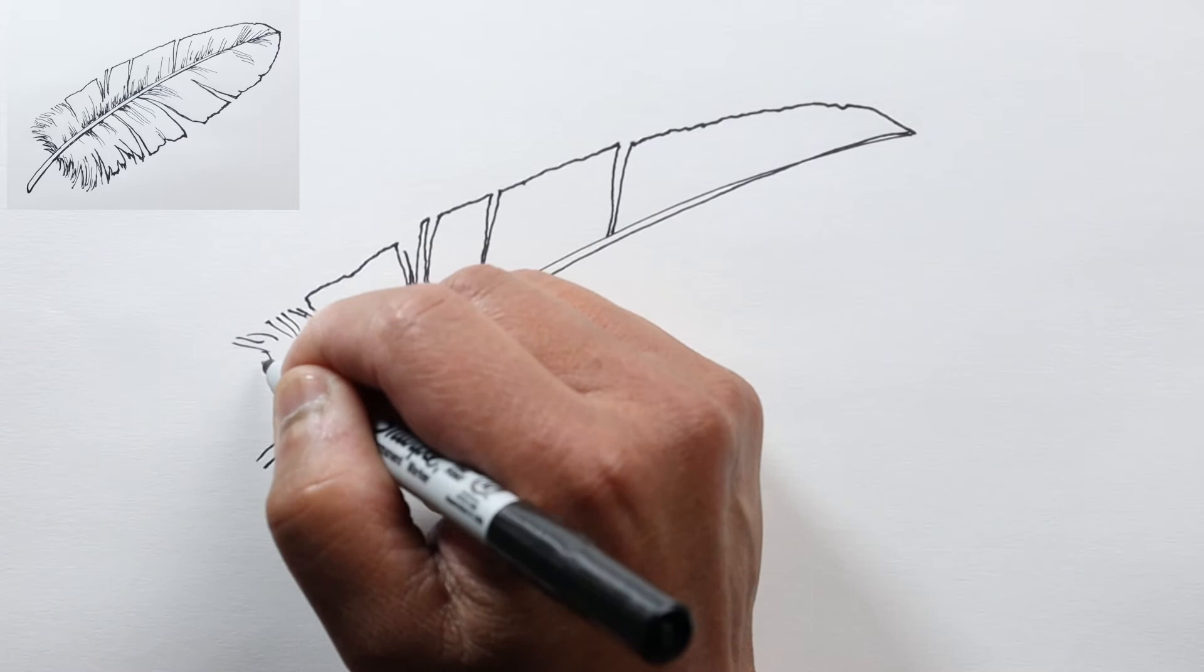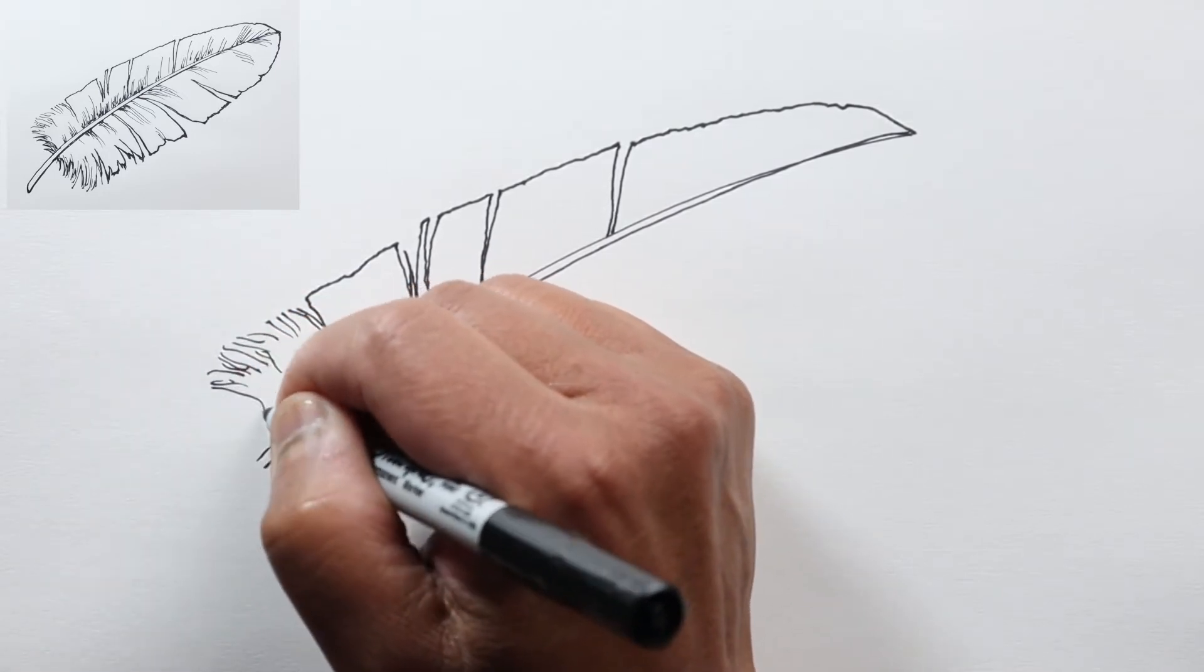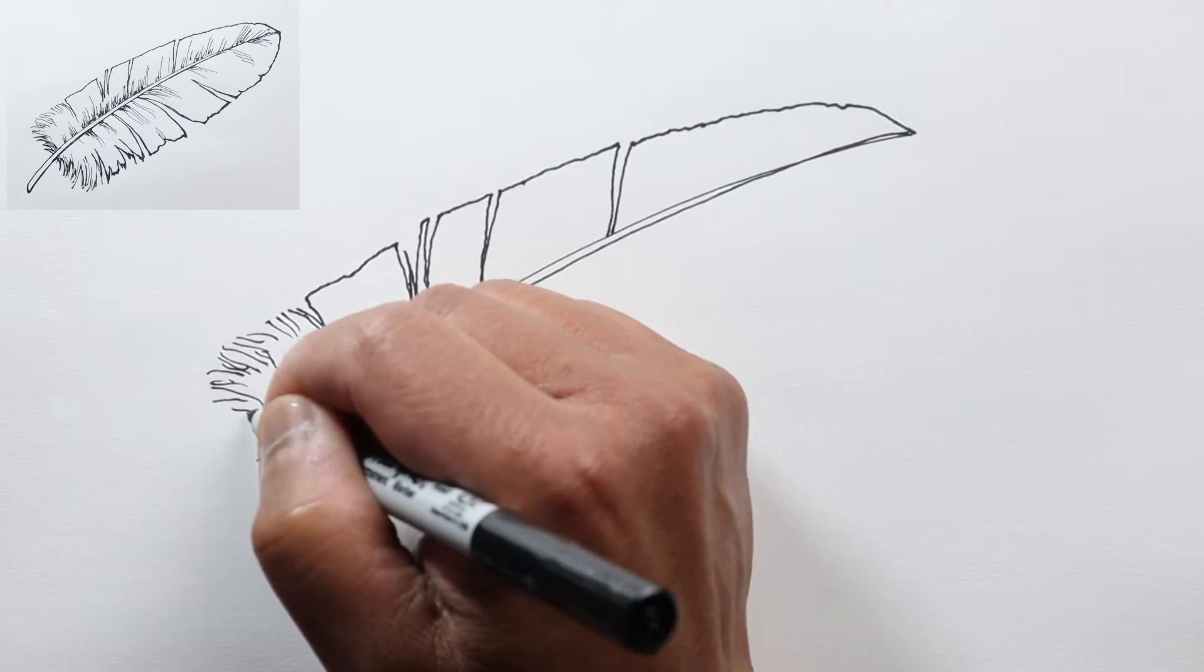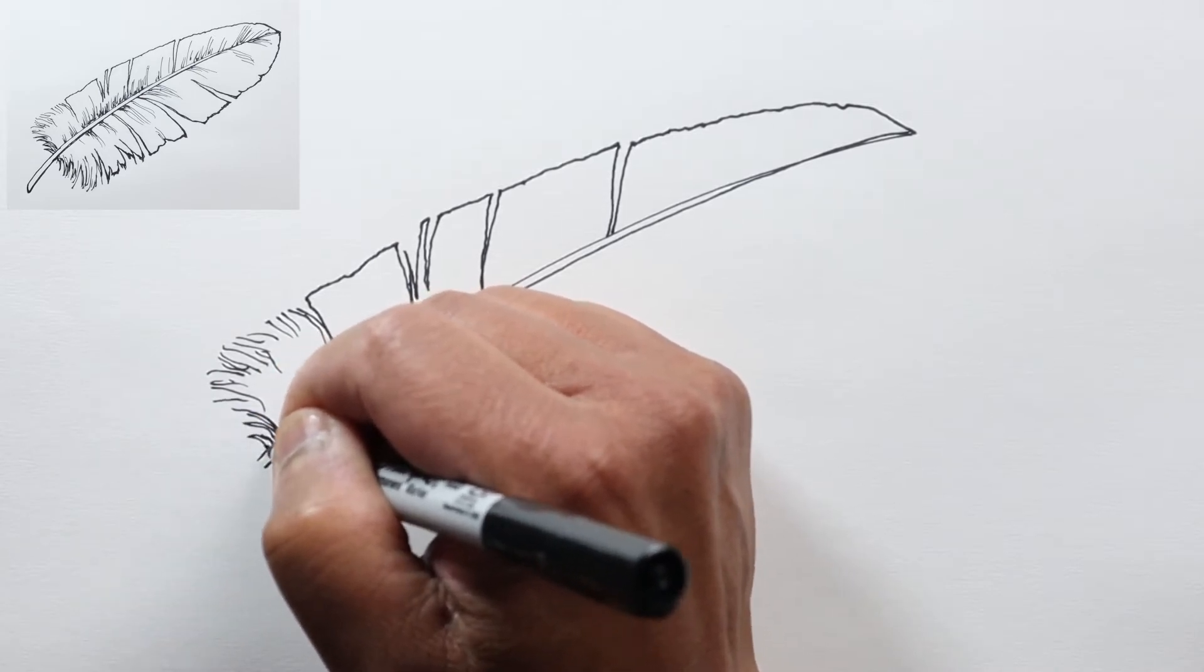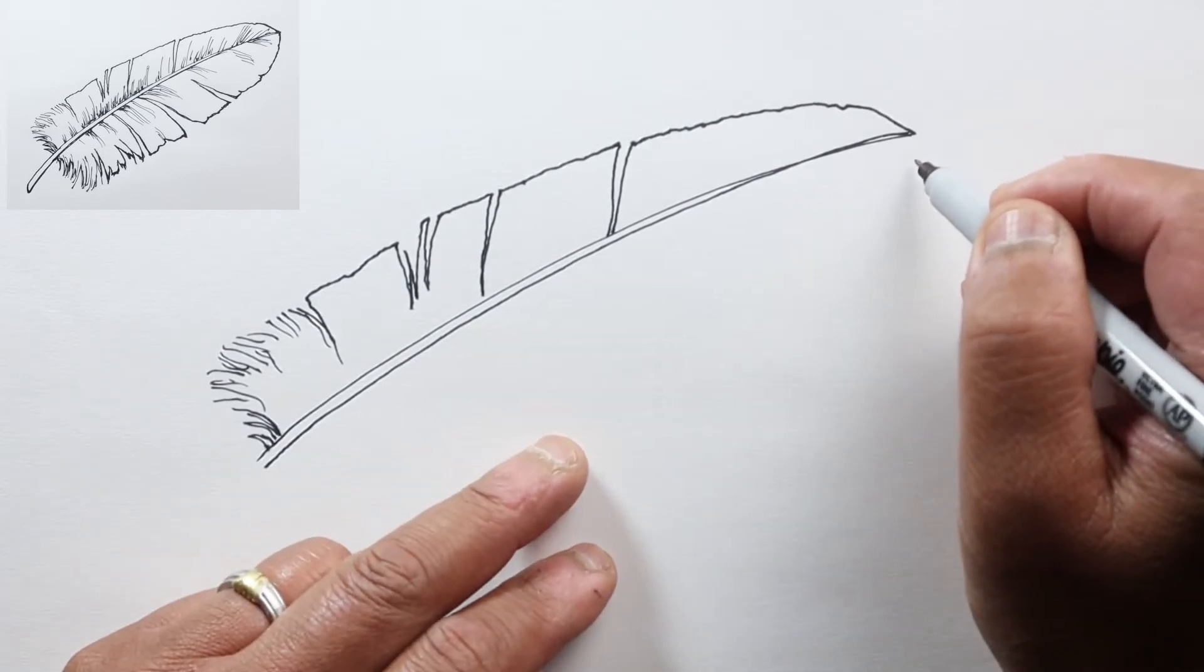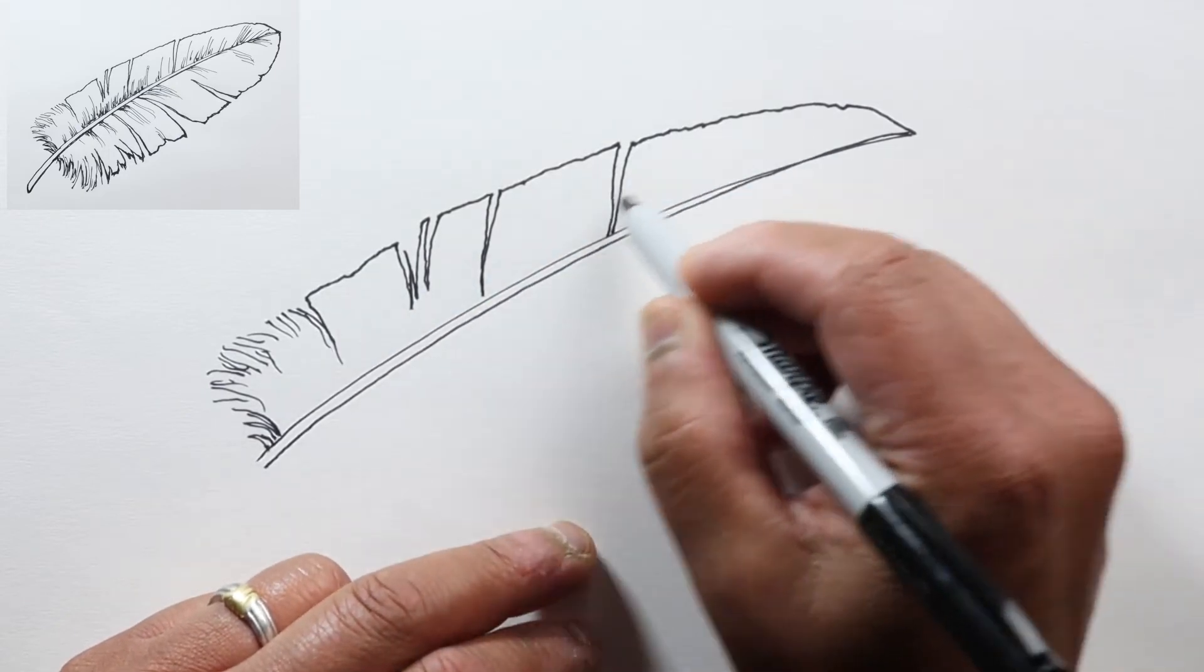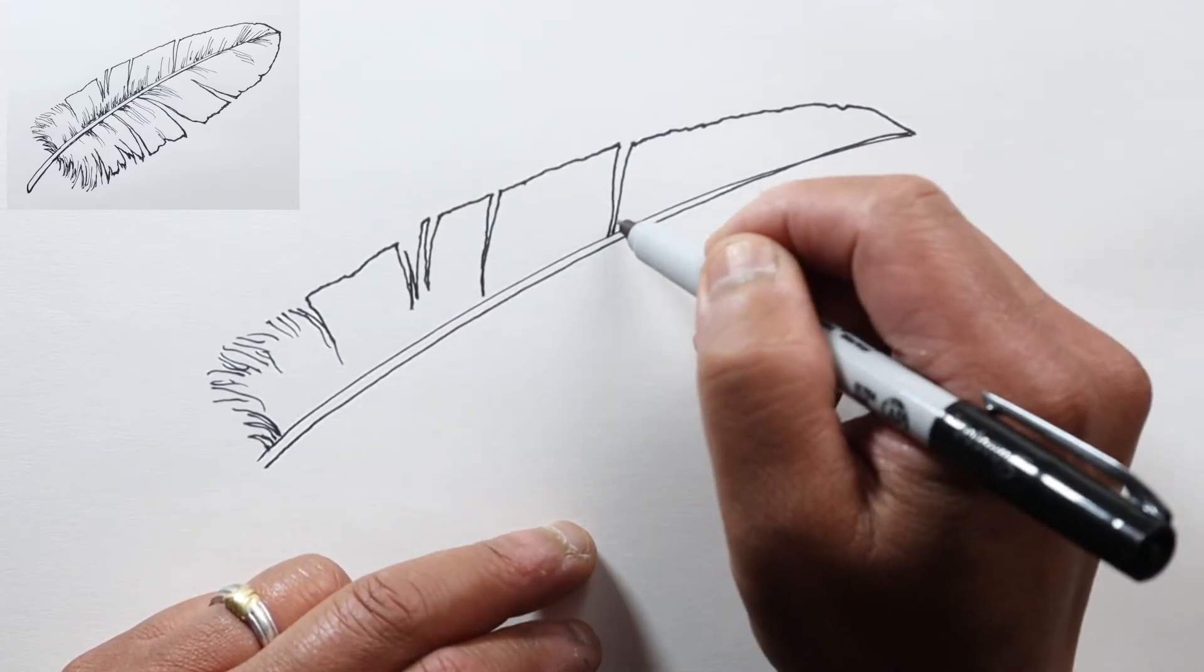Let's draw the other vein. This whole section, I believe, is called a vein, and all these separate parts that come off the rachis are called barbs. So let's go and do the other vein now.